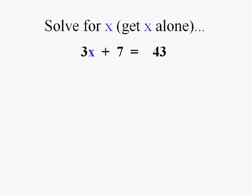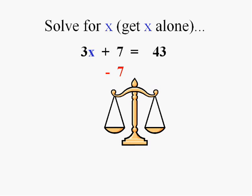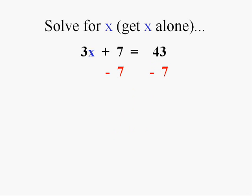The opposite of addition is subtraction. Of course if I do it on one side, I have to do it on the other. So let's compute this. The 7 will go away and 43 minus 7, we have 3x equals 36.